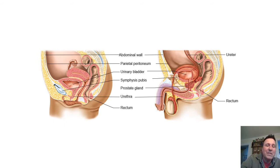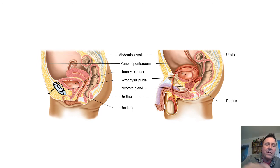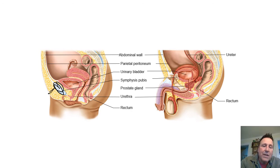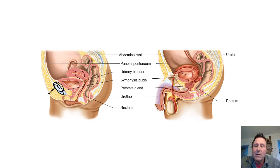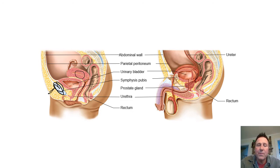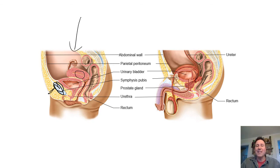Looking at males and females: your pubic symphysis is up in front, and right behind it is the bladder. In females, you can see a vagina and uterus between the bladder and the rectum. In males, you see the large intestine and then the bladder with space where the uterus would be. That's also why pregnant women have to pee a lot — the uterus gets huge and presses on the bladder, so pregnant women have a functionally smaller bladder capacity.